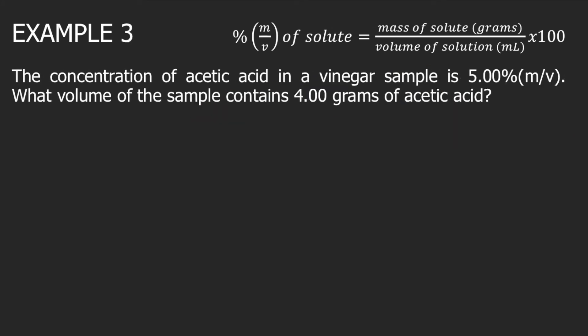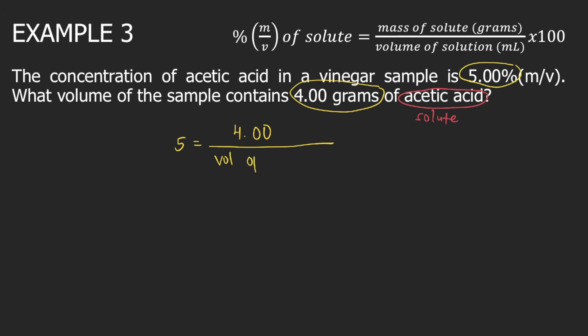Our last example is Example 3. The concentration of acetic acid in a vinegar sample is 5% M over V. What volume of the sample contains 4 grams of acetic acid? Acetic acid is our solute. Using the formula: 5 = (4.00 g / volume of solution) × 100. Don't forget the × 100.